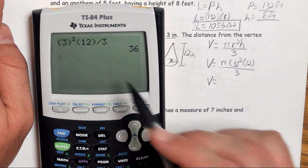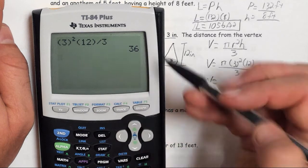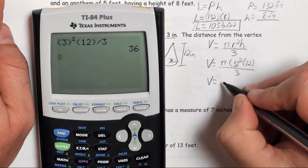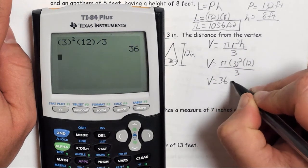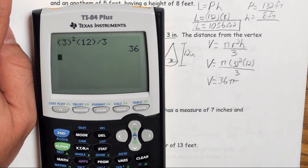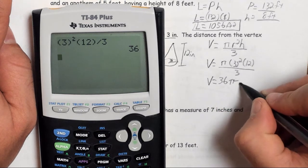Do everything except I leave the pi out. What that gives me is a coefficient of 36 with a pi on the end. So, it's 36 pi inches cubed.